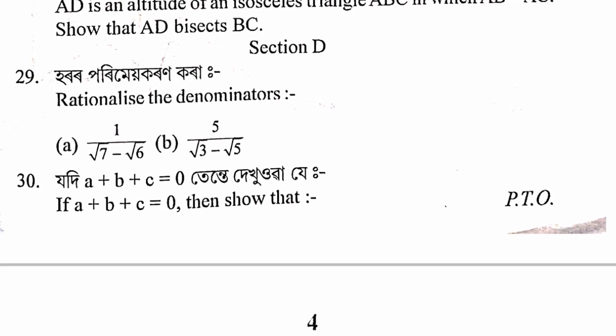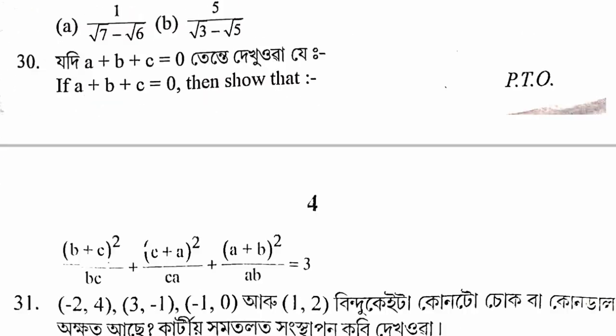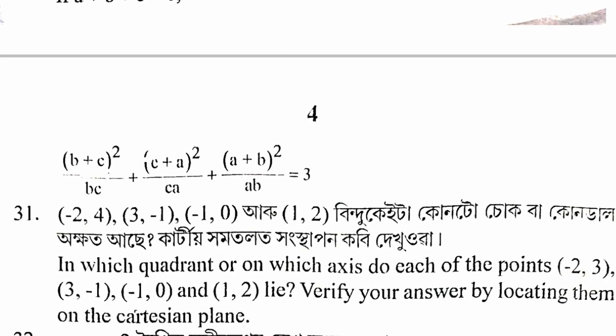If a plus b plus c equals 0, then (b plus c) whole squared by bc plus (c plus a) whole squared by ca plus (a plus b) whole squared by ab equals 3. This is from section b, exercise 2.5 or example 23.